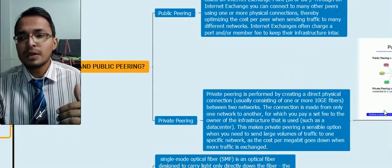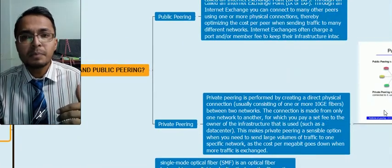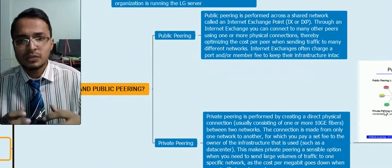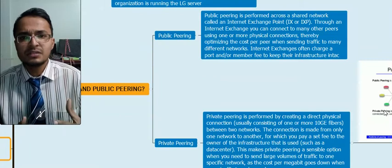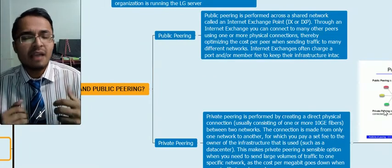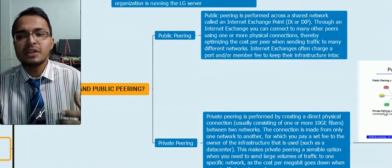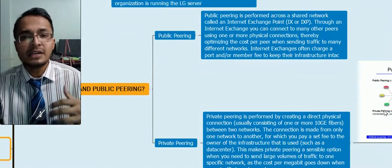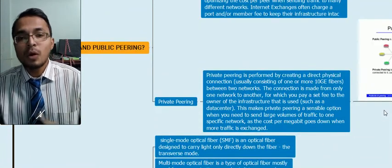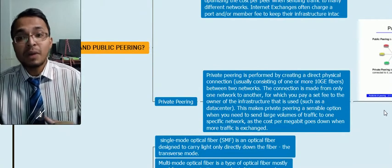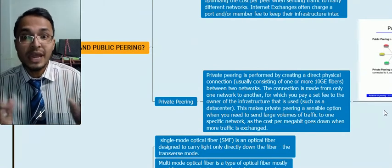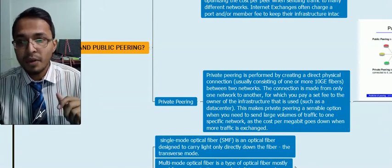Now talking about public peering and private peering. Public peering is just an exchange through a general public internet exchange point where everyone can share and use the information — it is not secure. Private peering is a direct physical connection between two networks. You can see in this diagram: the bottom one is private peering and the upper one is public peering.